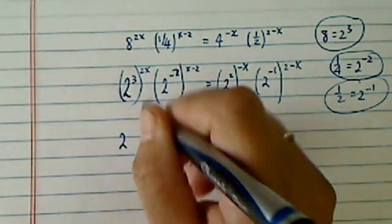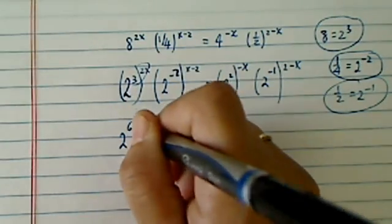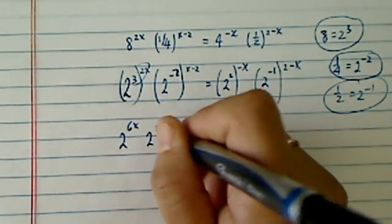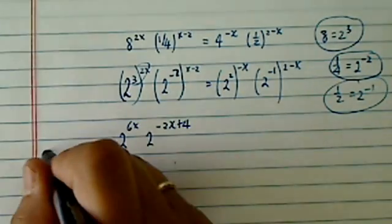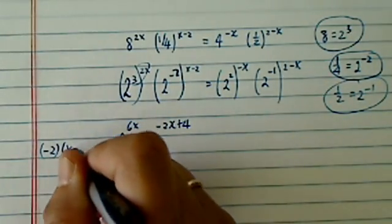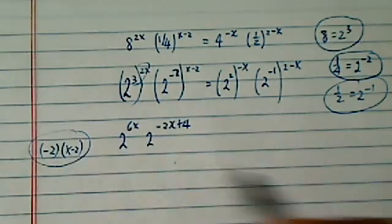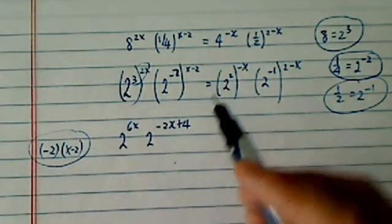From here, I'm going to clean it up. This one multiplied, I have 6x, and then 2 to the minus 2x plus 4. Let's make sure. I have minus 2 times x minus 2, so here I have minus 2x plus 4.